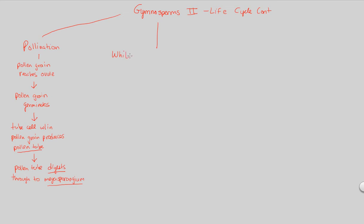While the pollen tube is growing and digesting its way toward the megasporangium, simultaneously on the female side there is also very important activity occurring. So while the pollen tube is growing, there will be activity within the megasporangium — the female side of the story. That's why this flowchart is divided into the male and female sides.